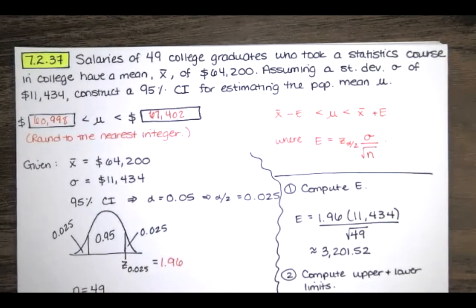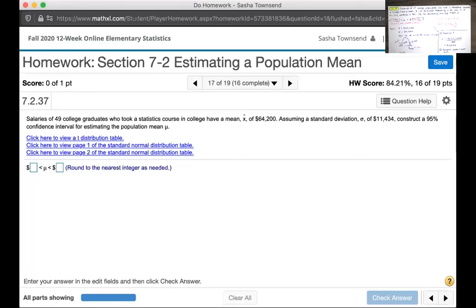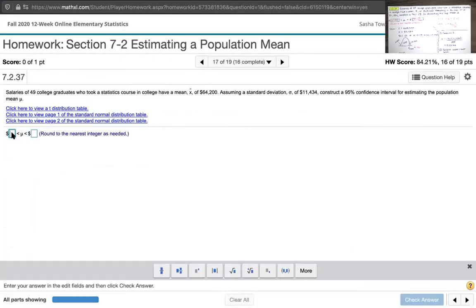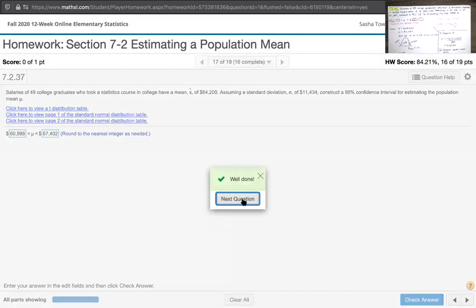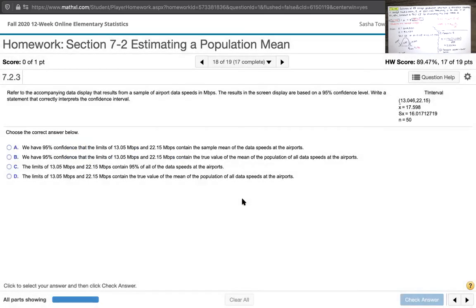So let's enter that in MyLab Statistics. So our lower limit was 60,998. Our upper limit was 67,402. Okay, great. And that was it. That was the whole question.